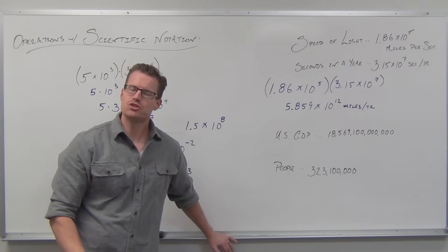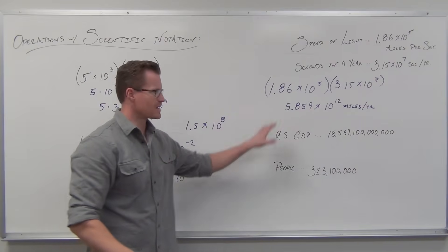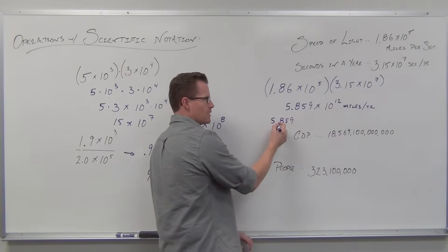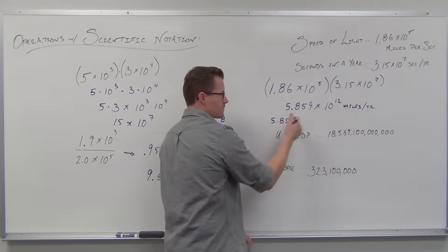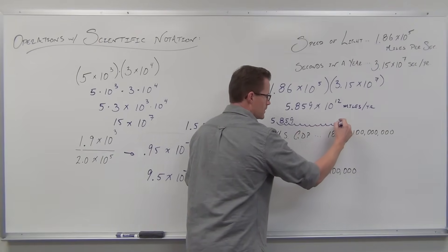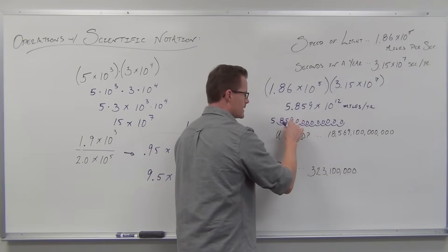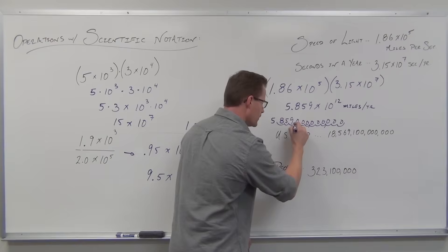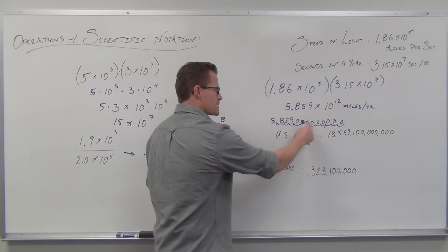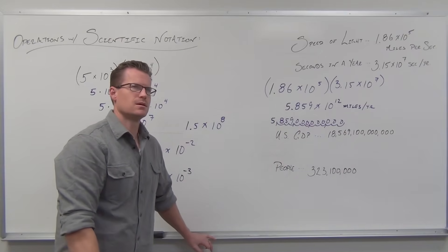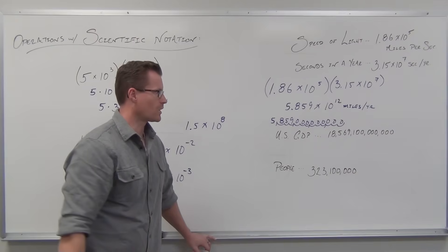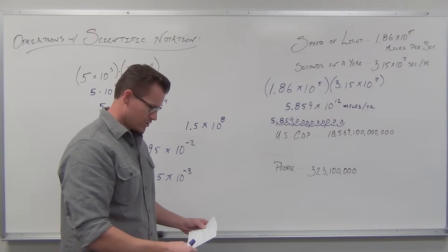So a light year is 5.859 times 10 to the 12th miles. That's crazy. If you had to write that out — this is scientific notation — you could translate it back into decimal notation. You'd have to move the decimal 12 place values to the right. That's how far light would travel in a year, which is a lot.